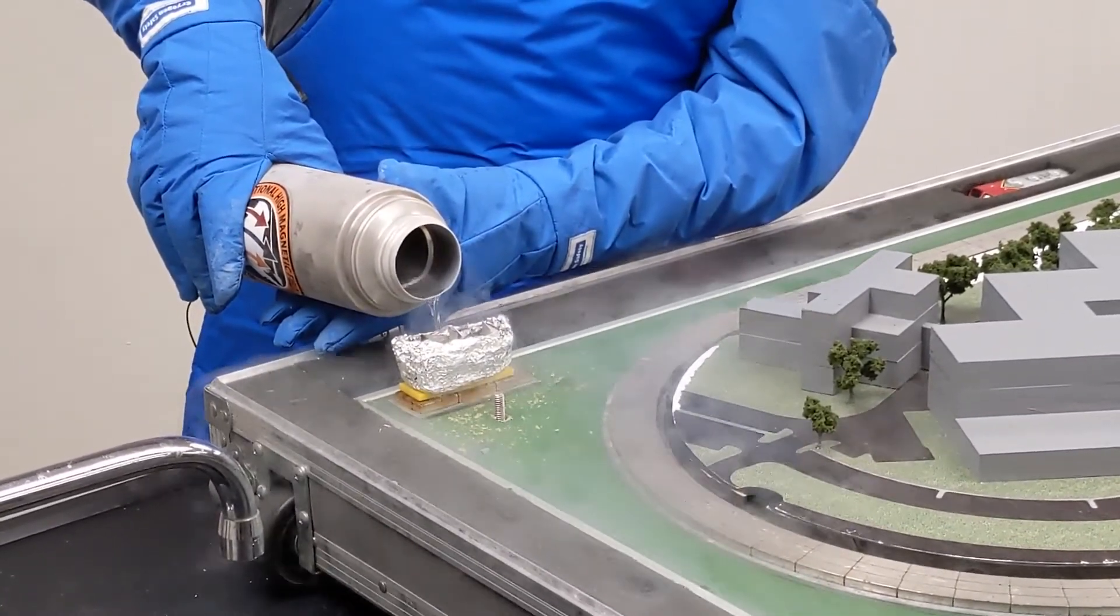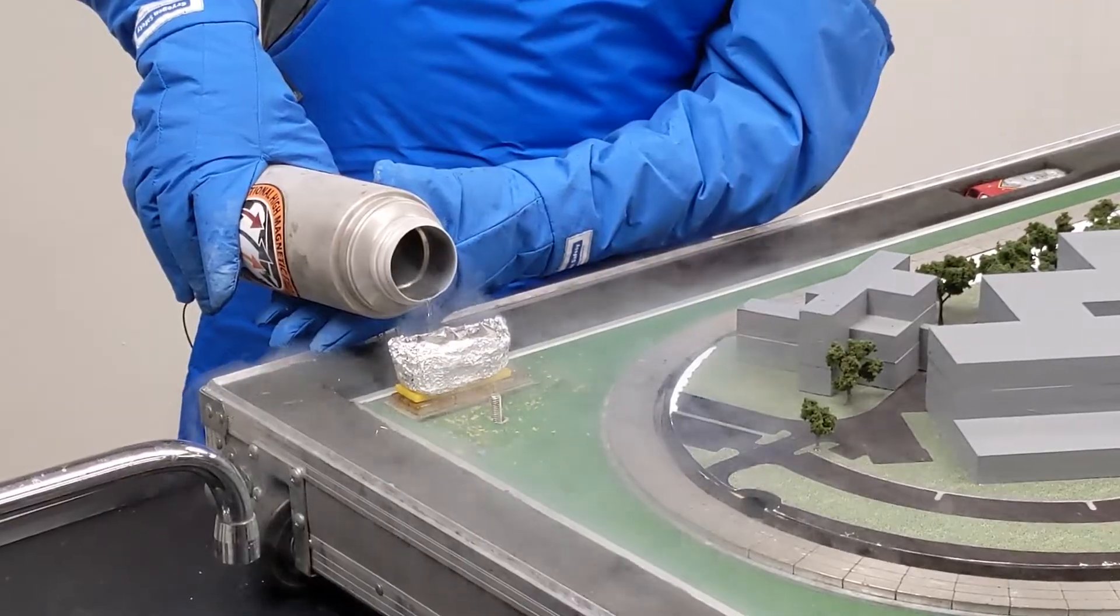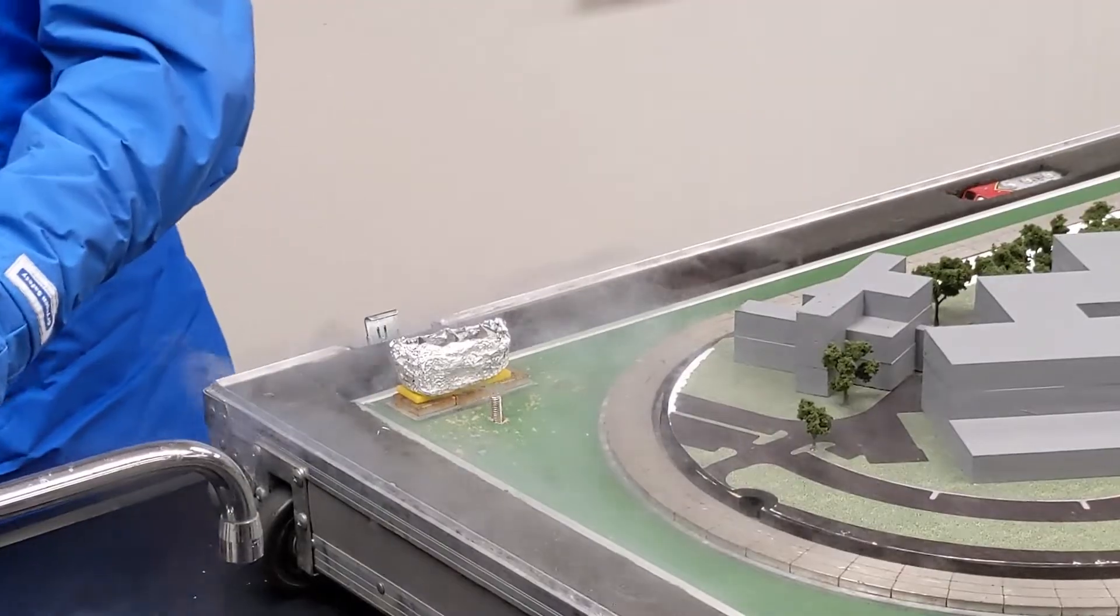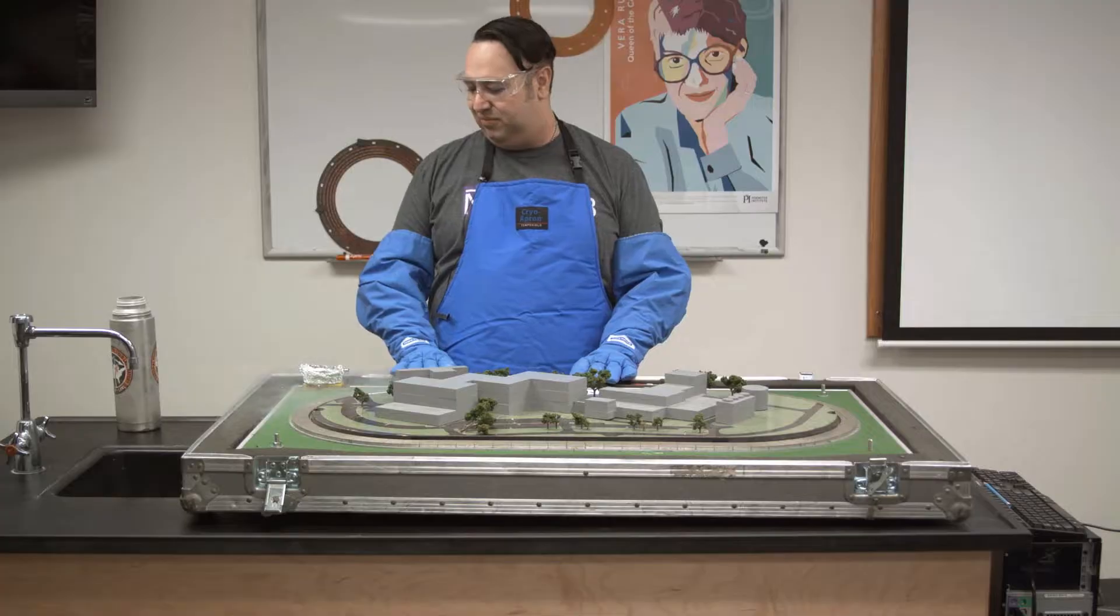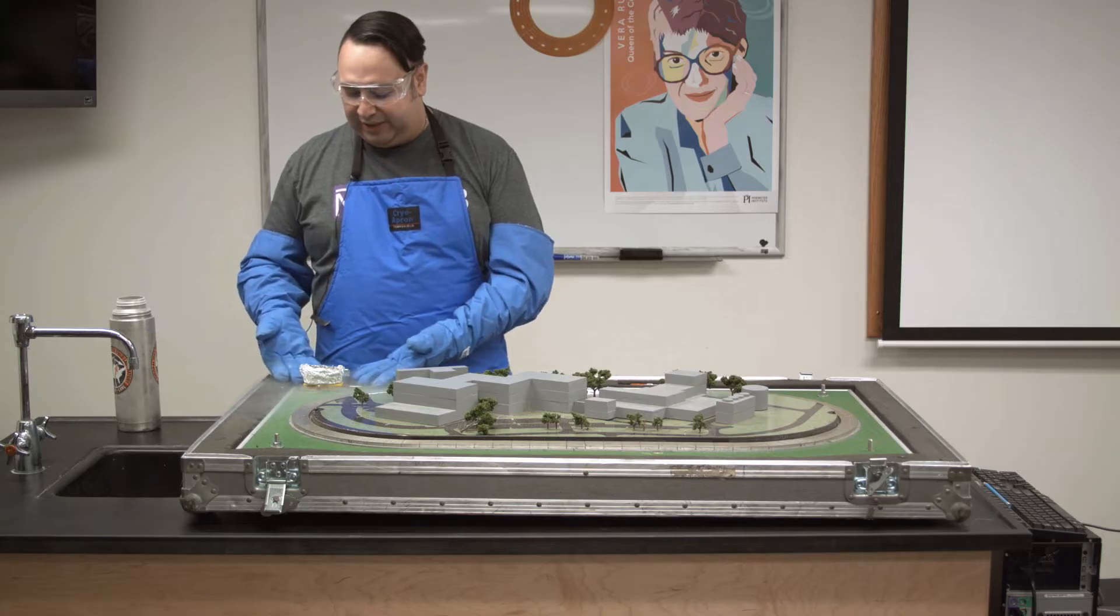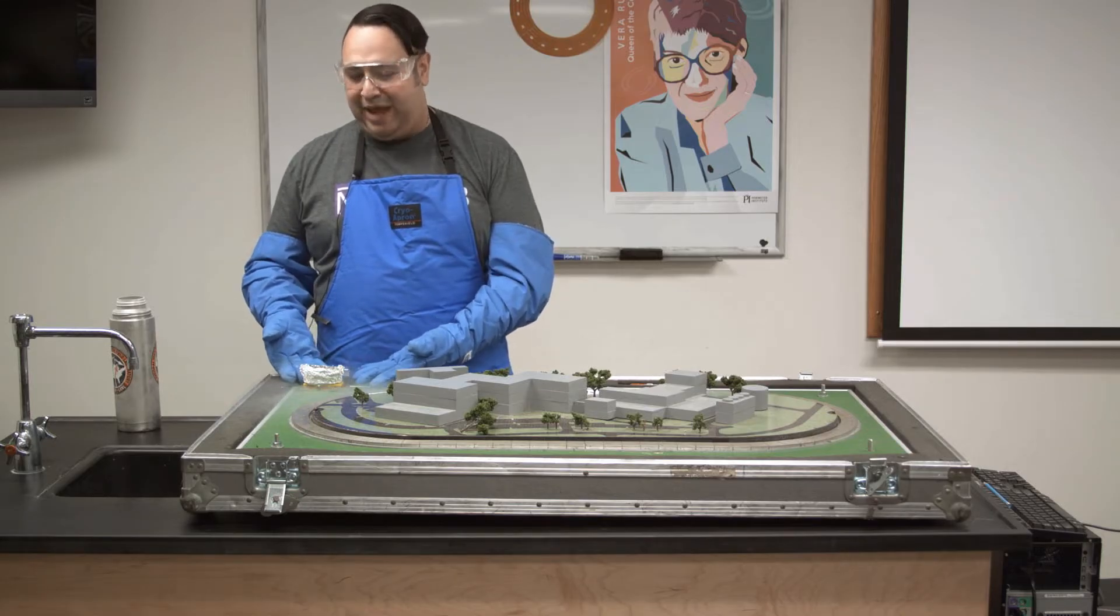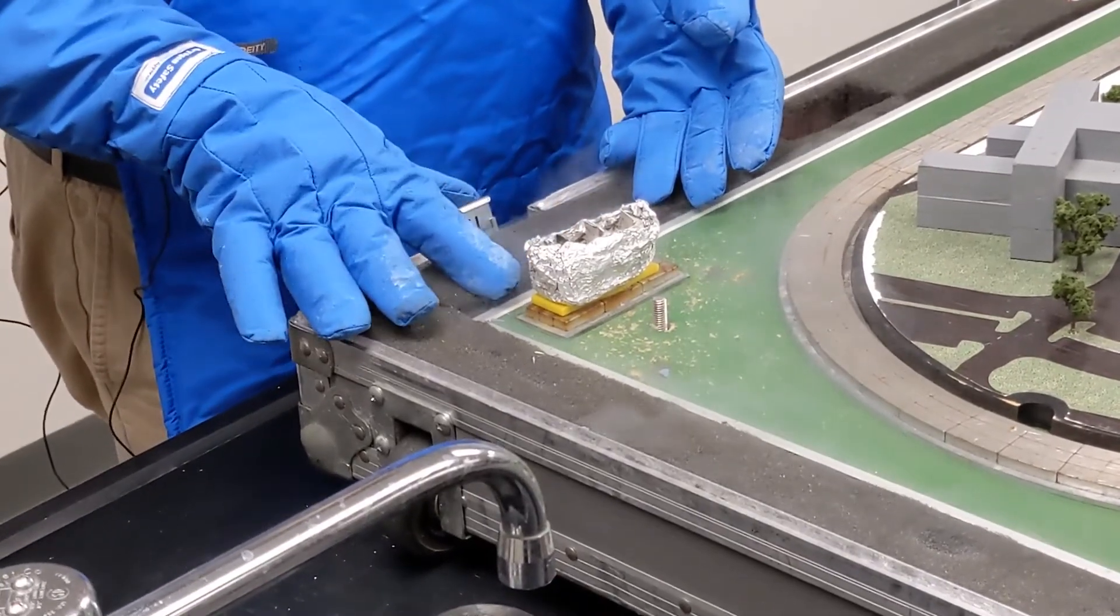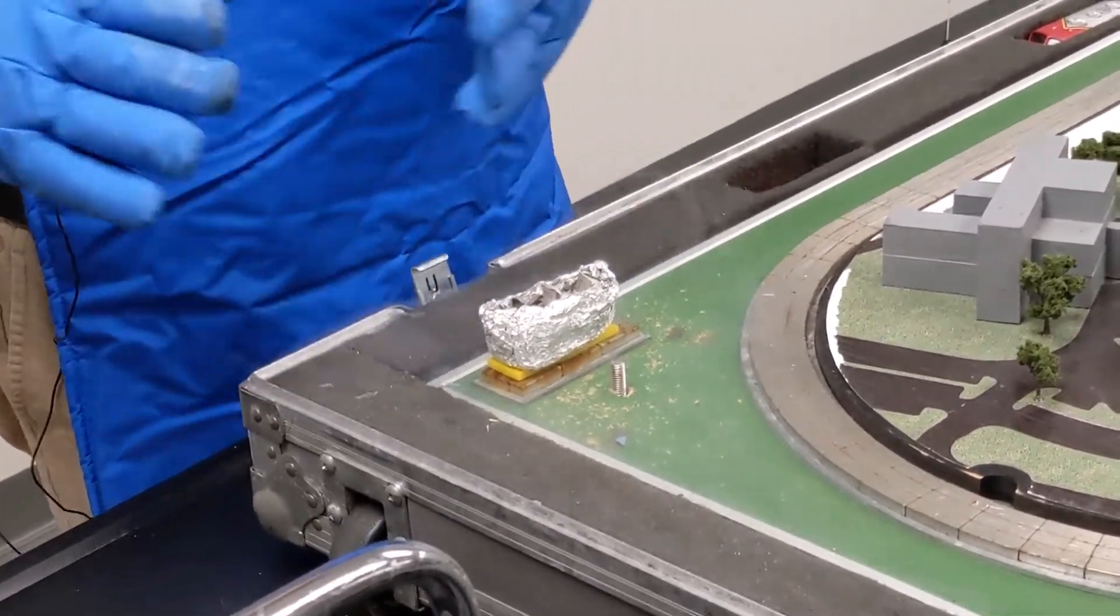So the superconductor is placed on a plastic spacer which is on top of a magnet. So the superconductor is a few millimeters away from the magnet and the magnetic field and when it reaches the critical temperature,